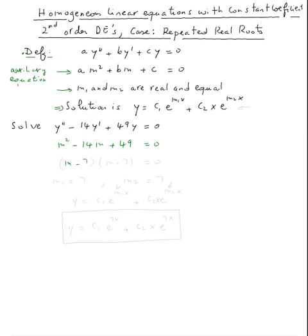So m minus seven times m minus seven. This tells us that m one equals seven and m two equals seven.